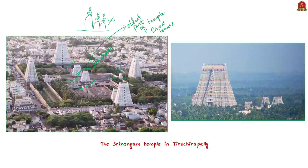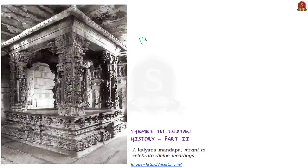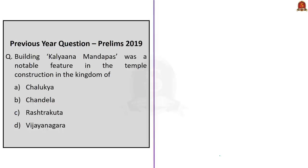For example, the Srirangam temple in Tiruchirapalli has as many as seven concentric rectangular enclosure walls, each with gopurams. As time progressed, when temple architecture reached the 14th century, certain new features appeared. One such feature is the Kalyana Mandapa, meant to celebrate divine weddings. This distinct feature is seen in the temple construction of the Vijayanagara kingdom. So the correct answer is Option D: Vijayanagara.